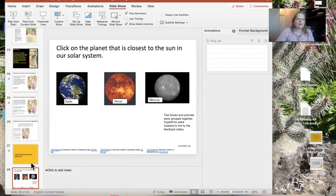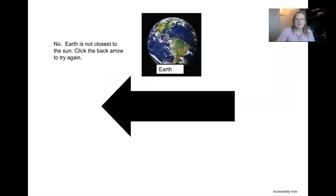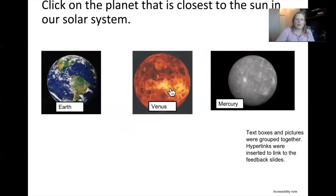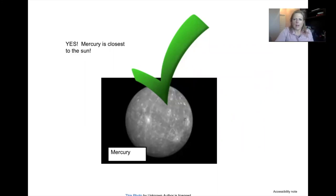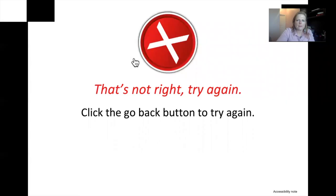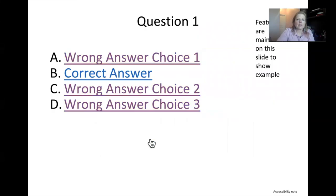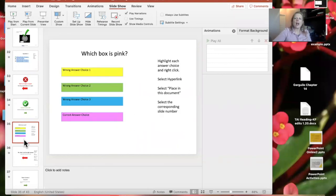Now I'll show you how to do hyperlinks so the slideshow works interactively and the kid can make choices. For example: the student is asked 'Click on the planet closest to the sun' — if they click Earth: 'Oh no, the earth is not closest to the sun, click the back arrow and try again.' They try Venus: 'Oh no, not Venus.' They try Mercury: 'Oh yes, Mercury is closest to the sun.' You can also do this with text for higher-level reading. The way you achieve this is by inserting hyperlinks that link to different slides in the document.